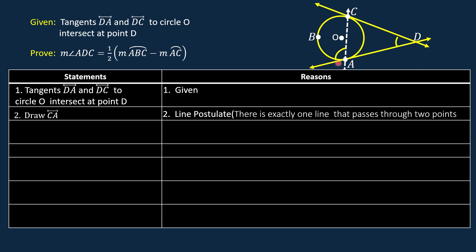Let us name this angle, angle 1, and let us name this angle, angle 2. ADC is a triangle. Its interior angles are angle CAD, angle 2, and angle ADC. Angle 1 is an exterior angle with respect to triangle ADC. With respect to angle 1, angle CAD is an adjacent angle, and angle 2 and angle ADC are remote interior angles.